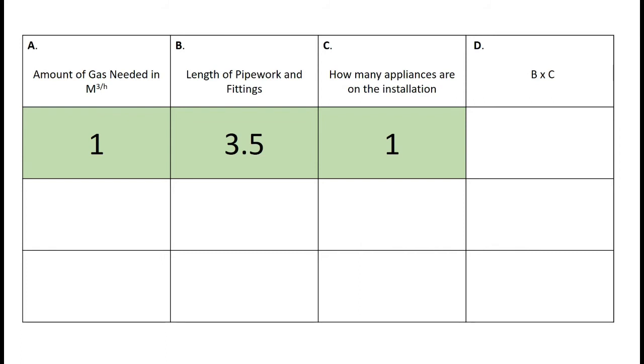From these figures we can now fill in box D, which is simply B times C. 3.5 times 1 gives us 3.5. Our row is now complete and with all these numbers you can easily calculate the correct pipe size.